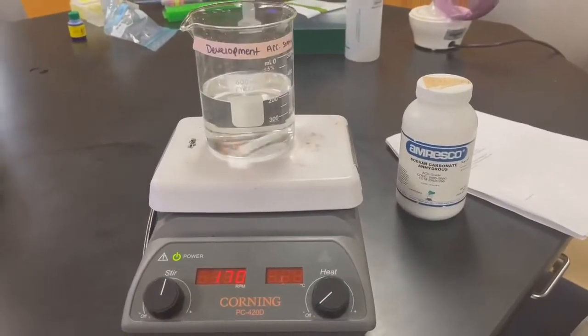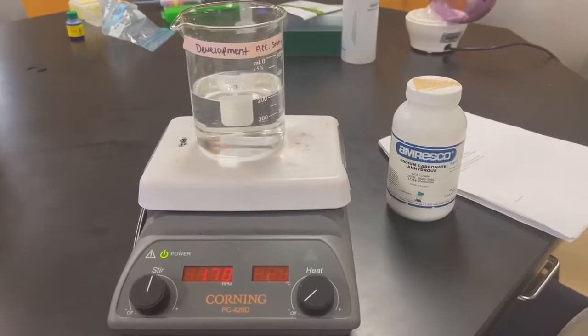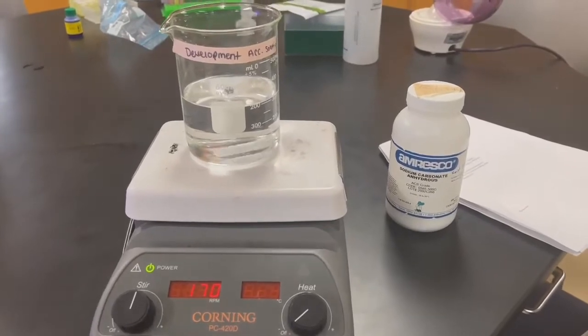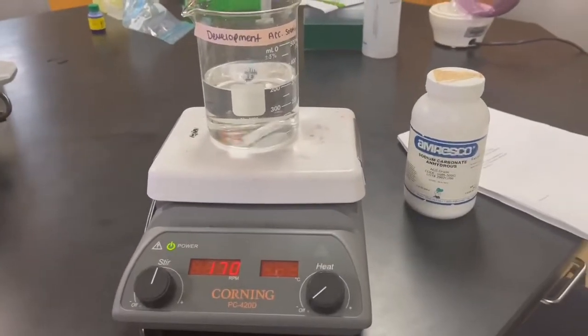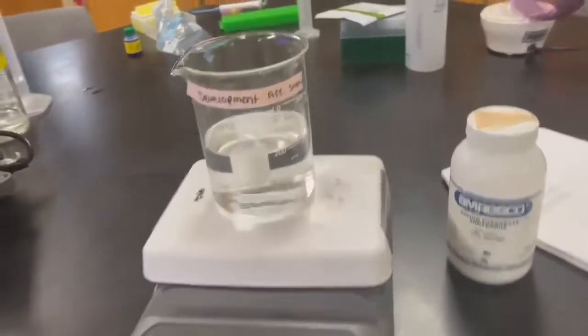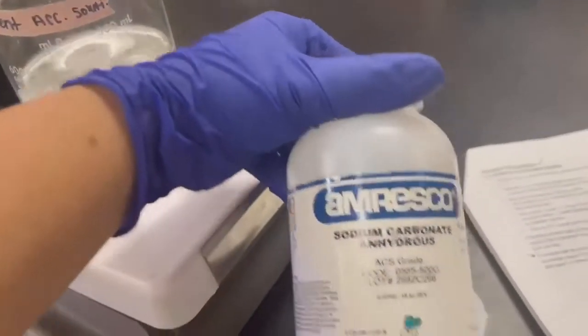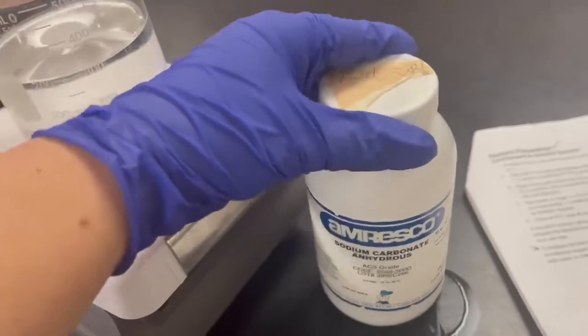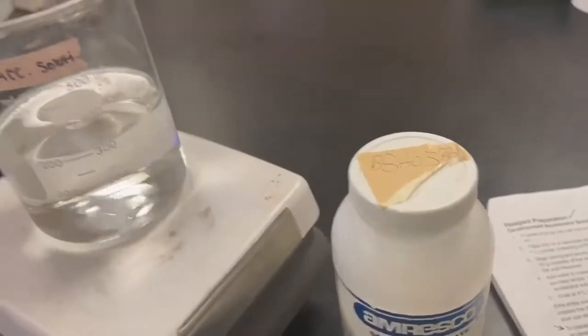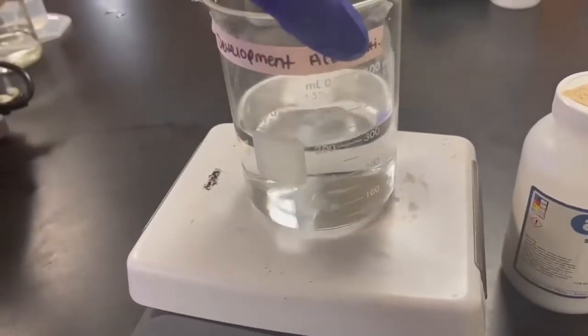The staining procedure that we will be using to stain our gels is called a silver stain. The first step in creating your silver stain, you need to create a development accelerator solution, which is a simple combination of sodium carbonate, 25 grams of sodium carbonate and 475 milliliters of deionized water.